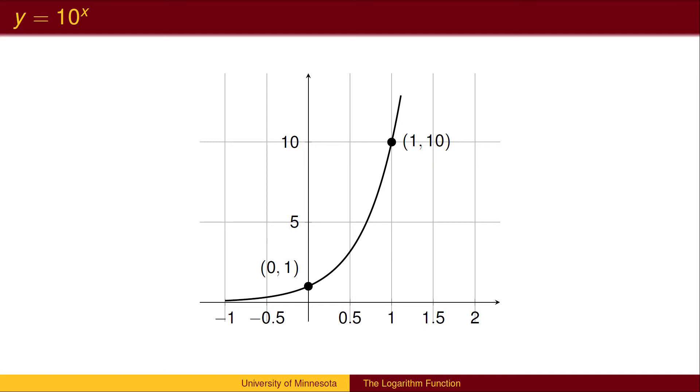Anything to the 0 power is 1, so when the exponent is 0, the y value is 1. When the exponent is 1, the y value is 10. Exponential growth is rapid. When the exponent is 12, the y value is 1 trillion.